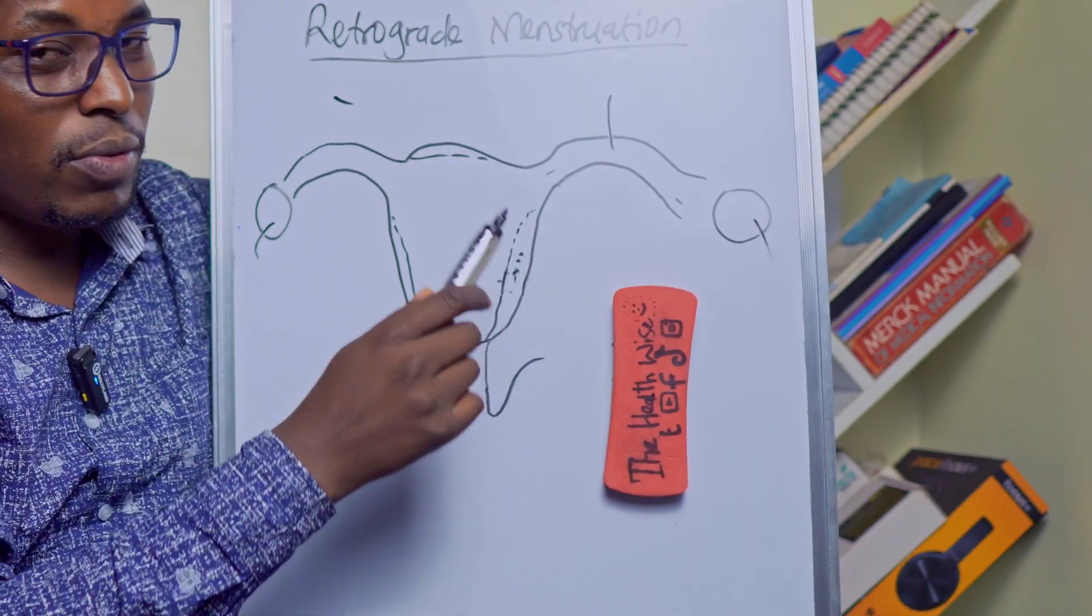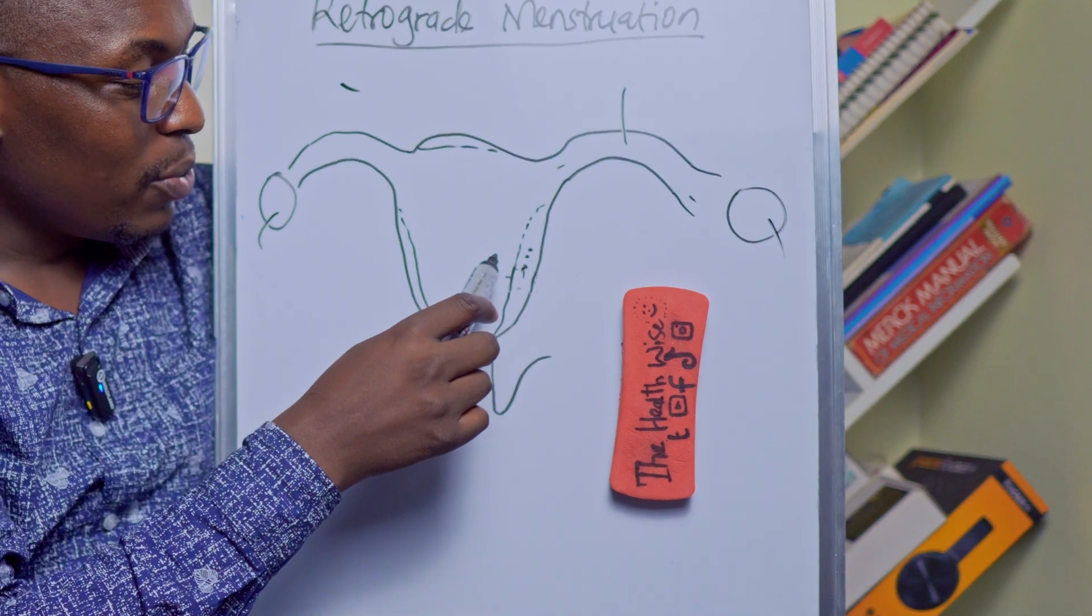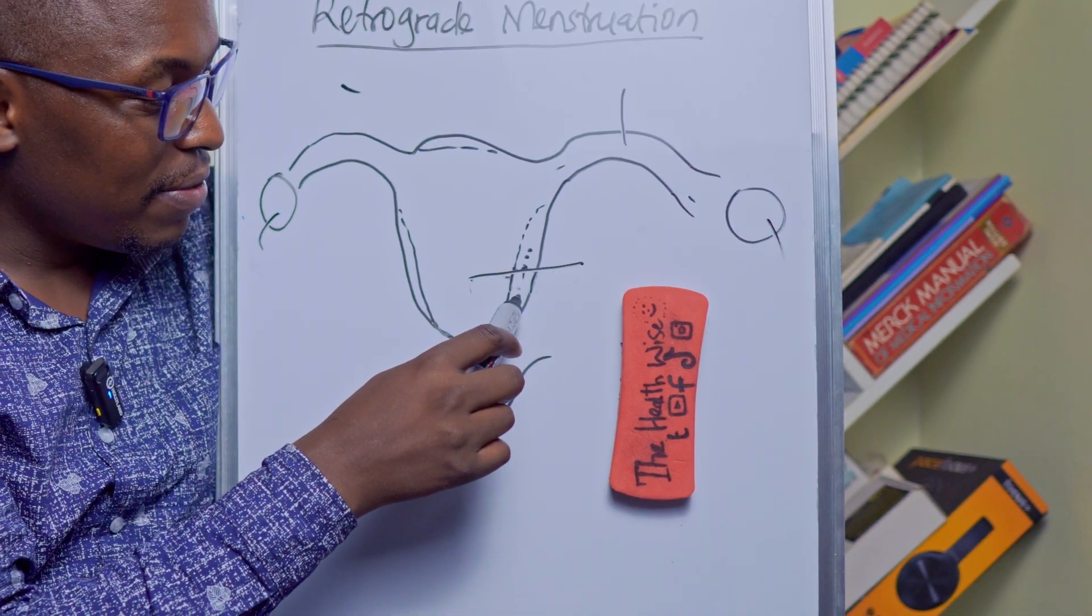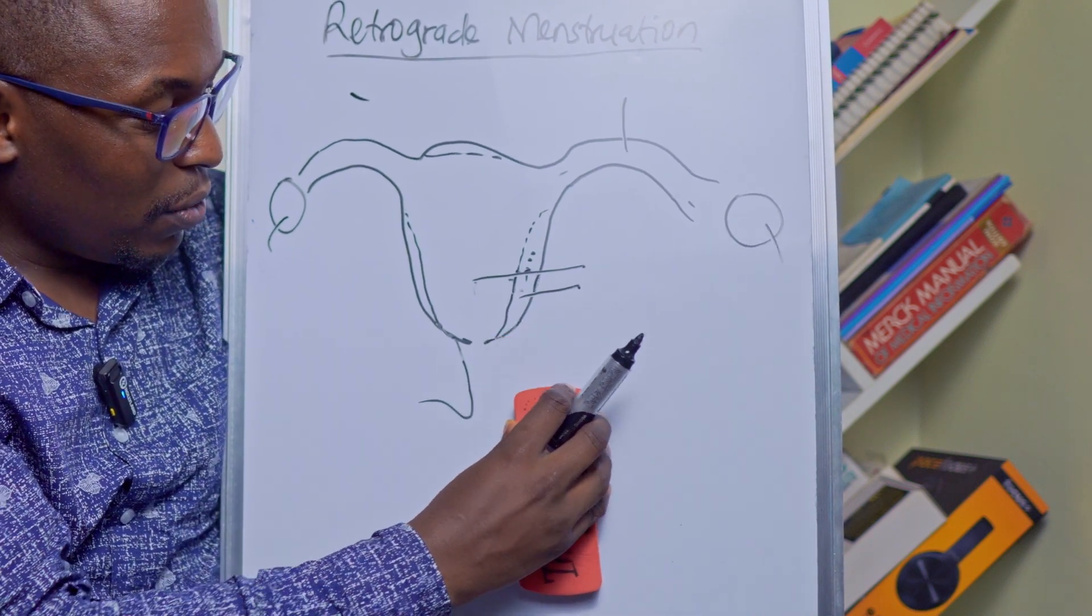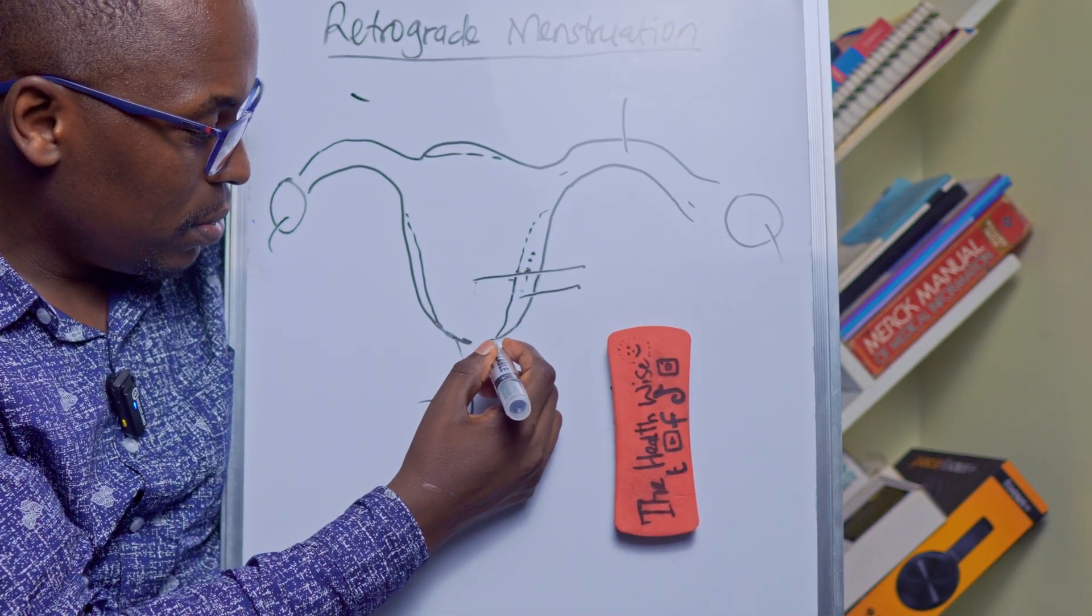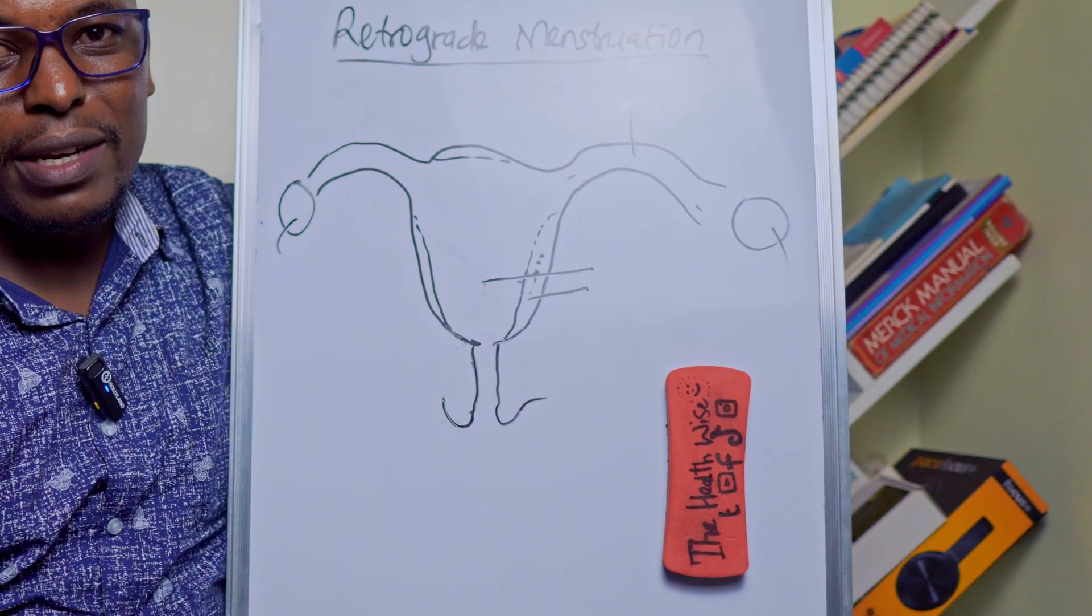And then we have the uterine cavity and you have the uterine wall and this is our vaginal canal. Let's make it a little bit comfortable for you. What usually happens is you have four hormones.